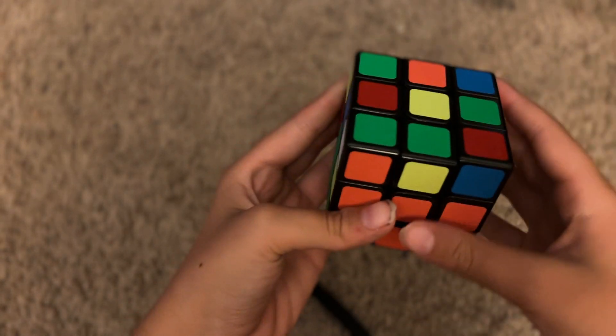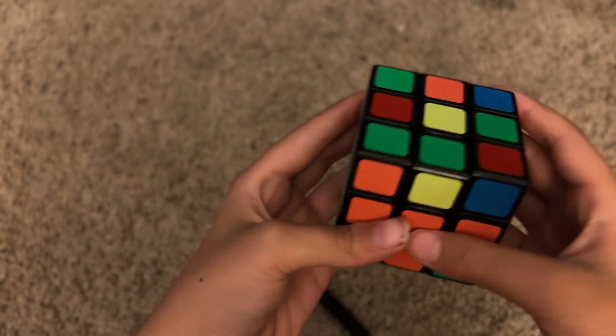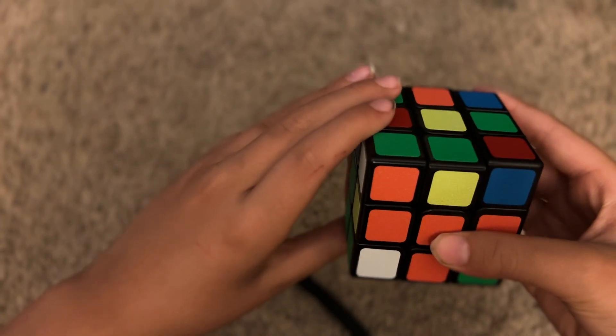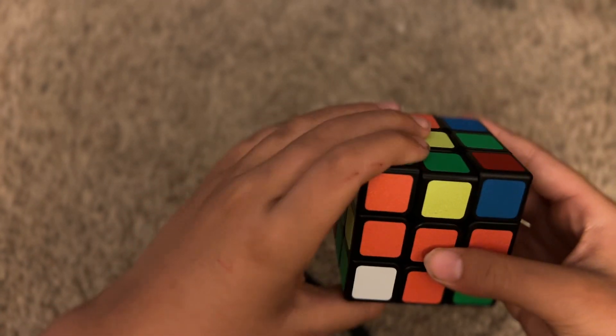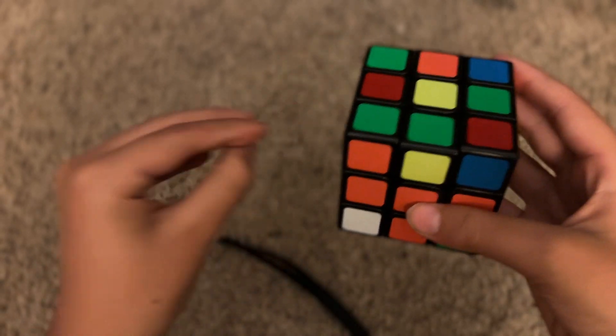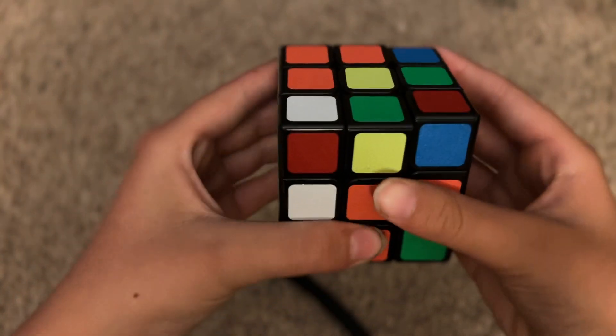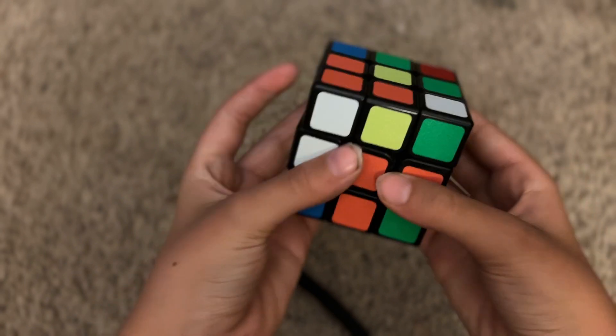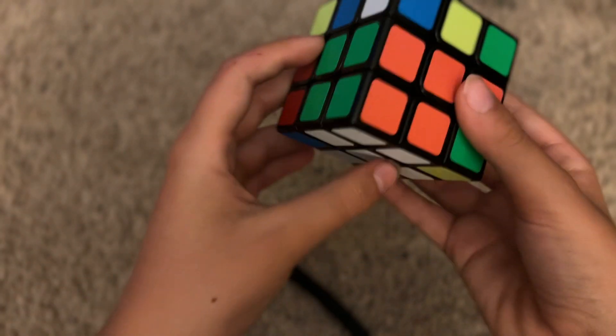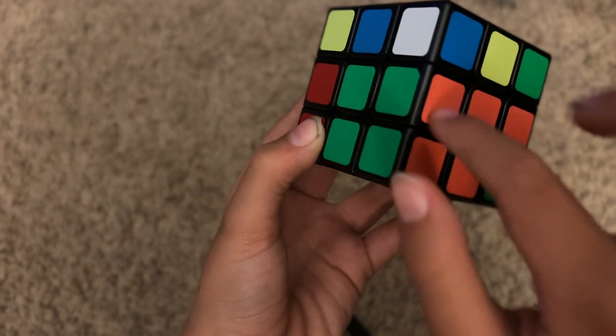We hold it in between this and then have it on the left if it's right here. So I do L prime, U prime, and then L. And now the white corner is in, and this edge is already done.